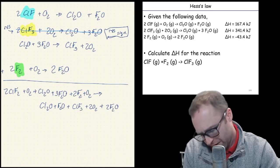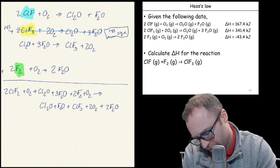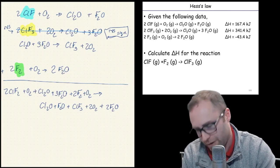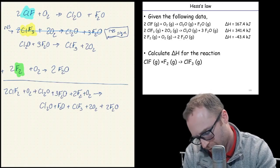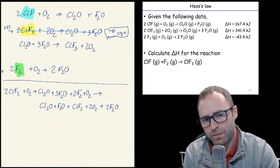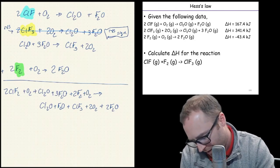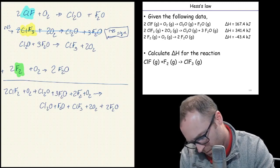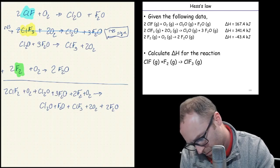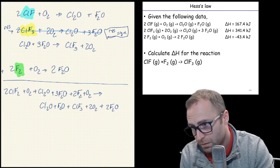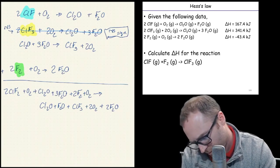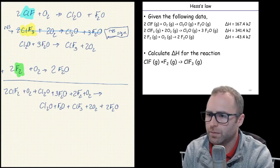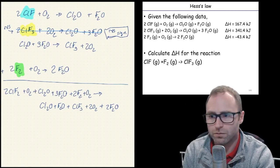Okay anything else we can cancel? We've got three F2O as our products. We have three F2O as reactants. So that means that those can all get canceled out. And if we clean this up now a little bit the things that we're left with are something like that. Looking right?